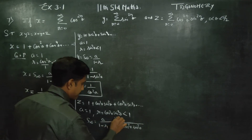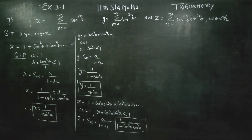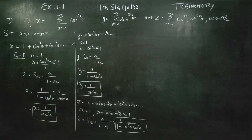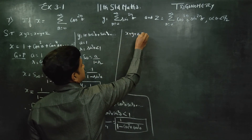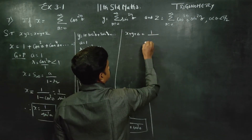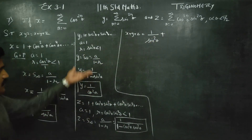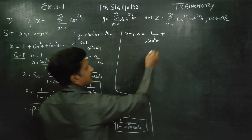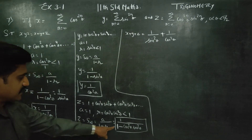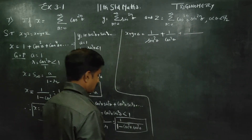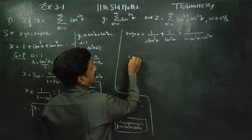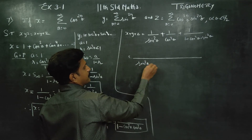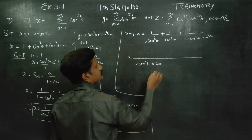All are ready. X is ready, Y is ready, Z is ready. After completing this, I am going to start with the RHS. X plus Y plus Z is equal to: X is 1 by sin square theta, Y is 1 by cos square theta, Z is 1 by (1 minus cos square theta times sin square theta) = 1 by sin square theta cos square theta. I am going to take the LCM of sin square theta and cos square theta.